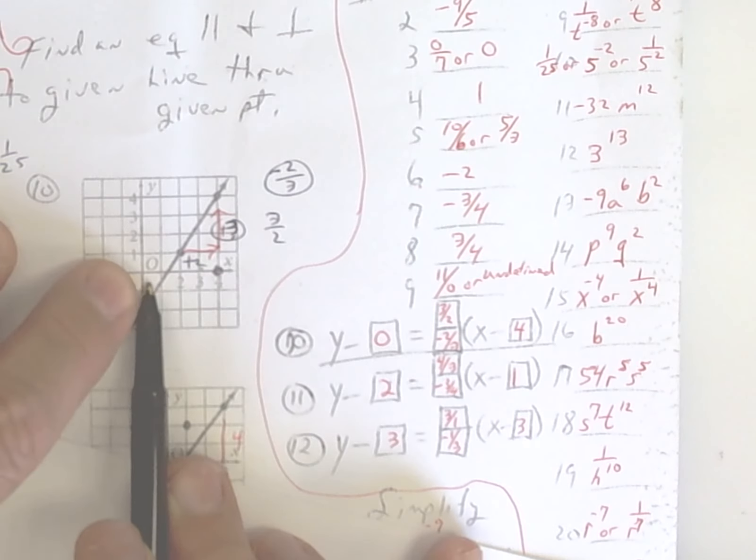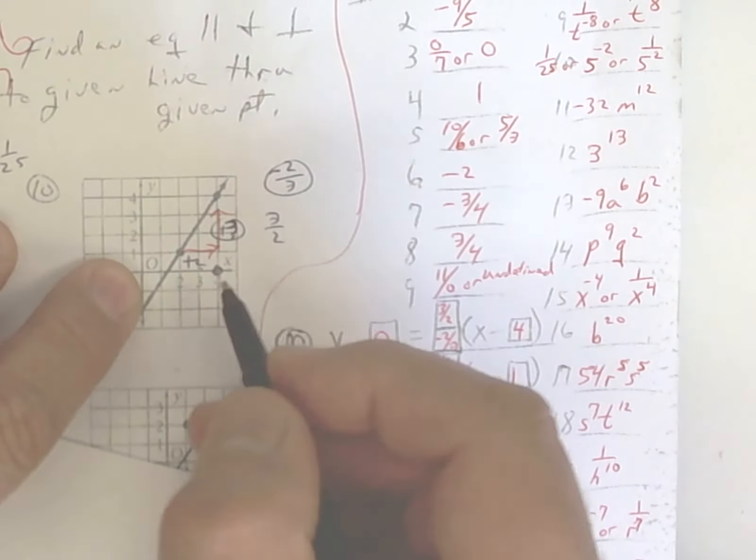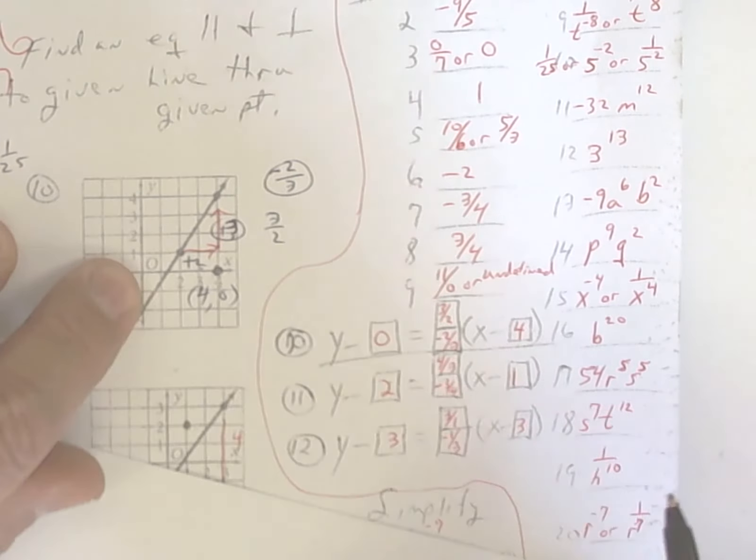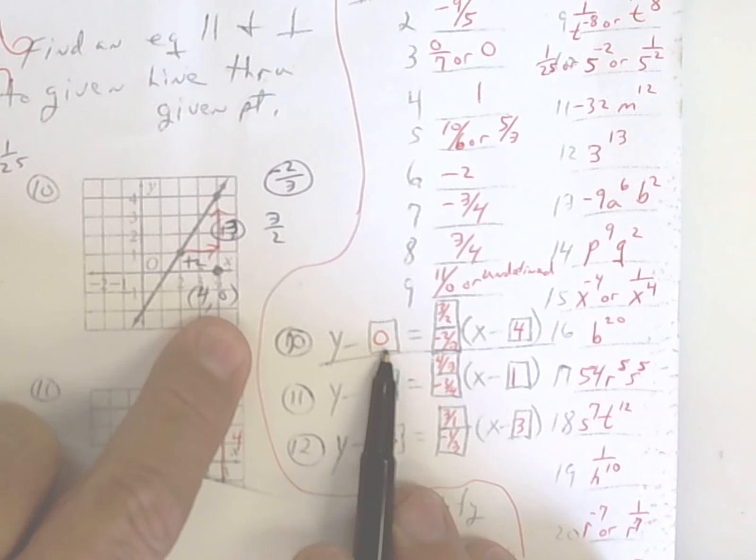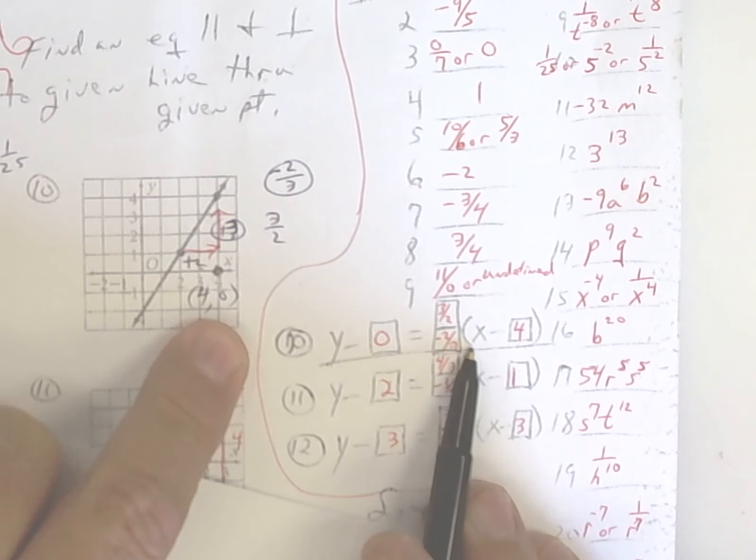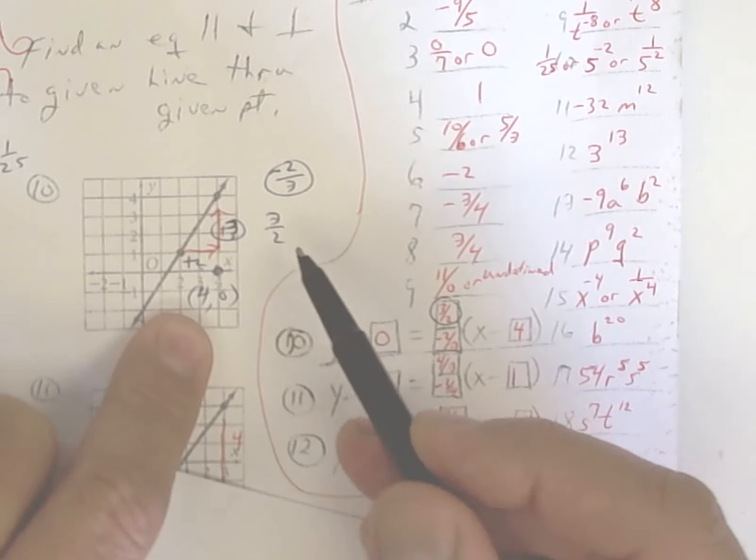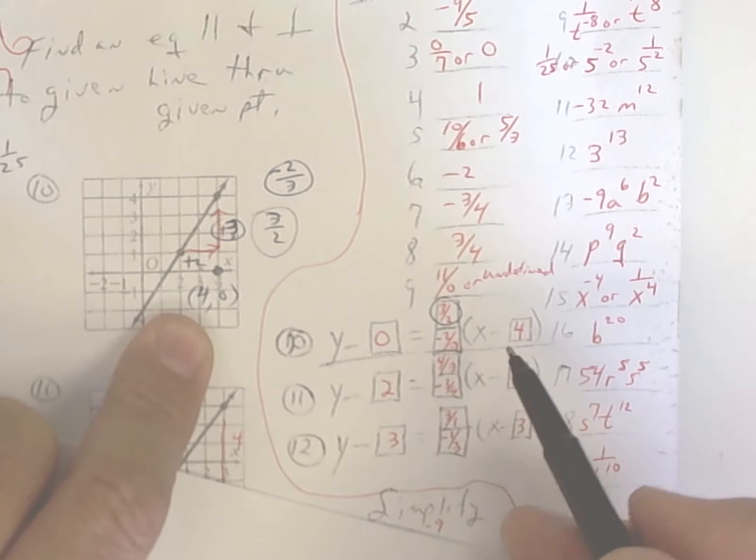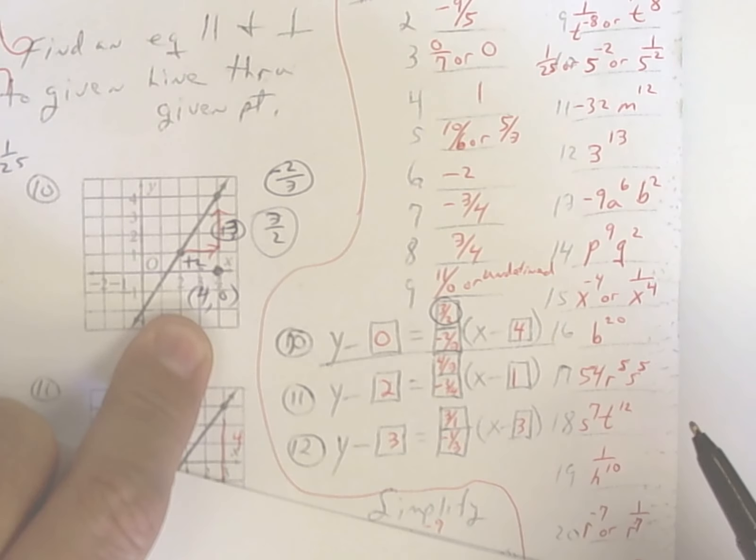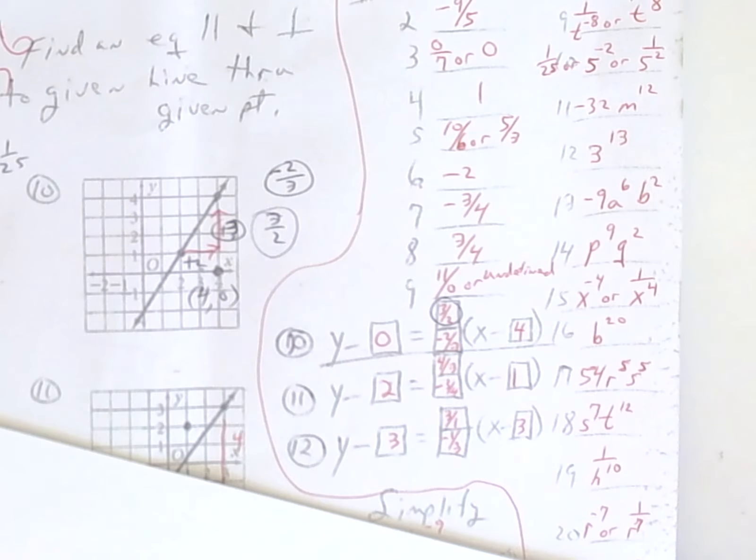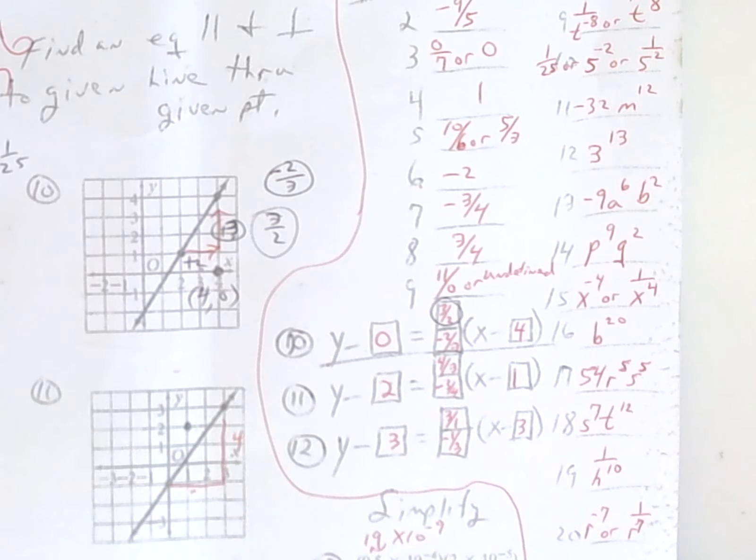So over here, we want to go through this point. This point is 1, 2, 3, 4. So it's over 4, up 0. So it's going to be y minus y, which is 0, equals x minus x, which is 4. And then if you want parallel, use 3 over 2. If you want perpendicular, use negative 2 over 3. Remember, find the slope and then flip it and change it. You can see the answers on my sheet so you can rework it.